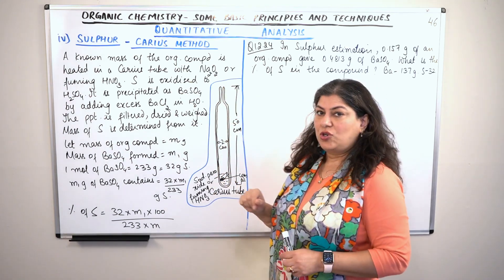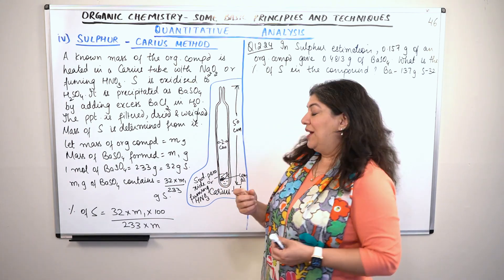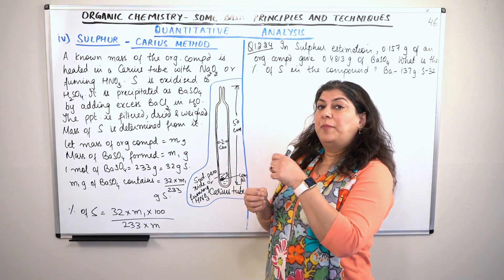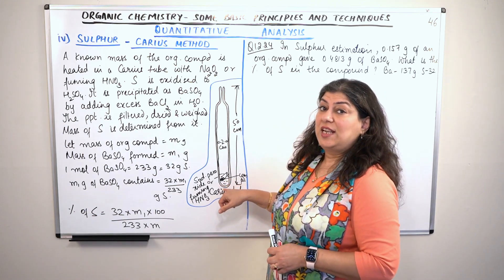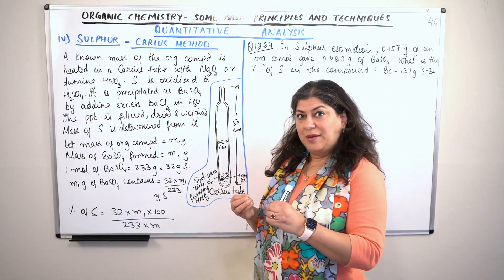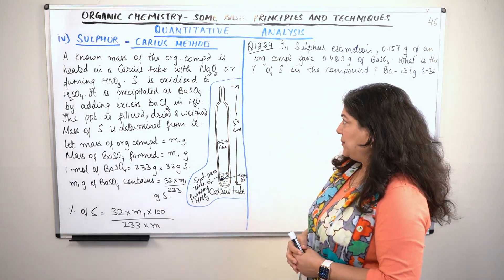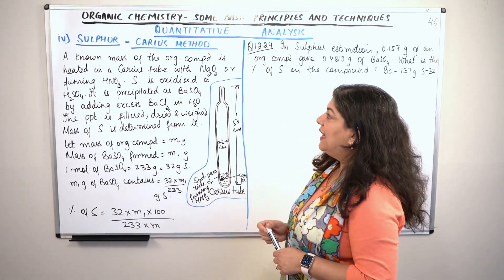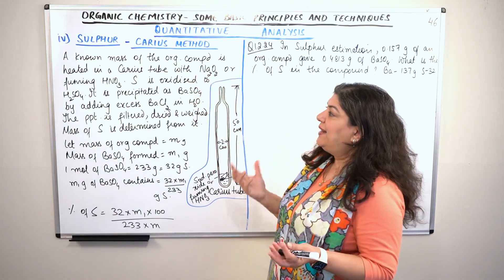The Carius tube is a long tube, about 50 centimeters long and about 2 centimeters wide. It has a smaller tube inside, similar to the ignition tube we use for sodium. We put the compound in it and heat it up in the Carius tube in the presence of a strong oxidizing agent — in this case fuming nitric acid and sodium peroxide. So we take the organic compound, put it in the Carius tube, and heat it with sodium peroxide or fuming nitric acid.